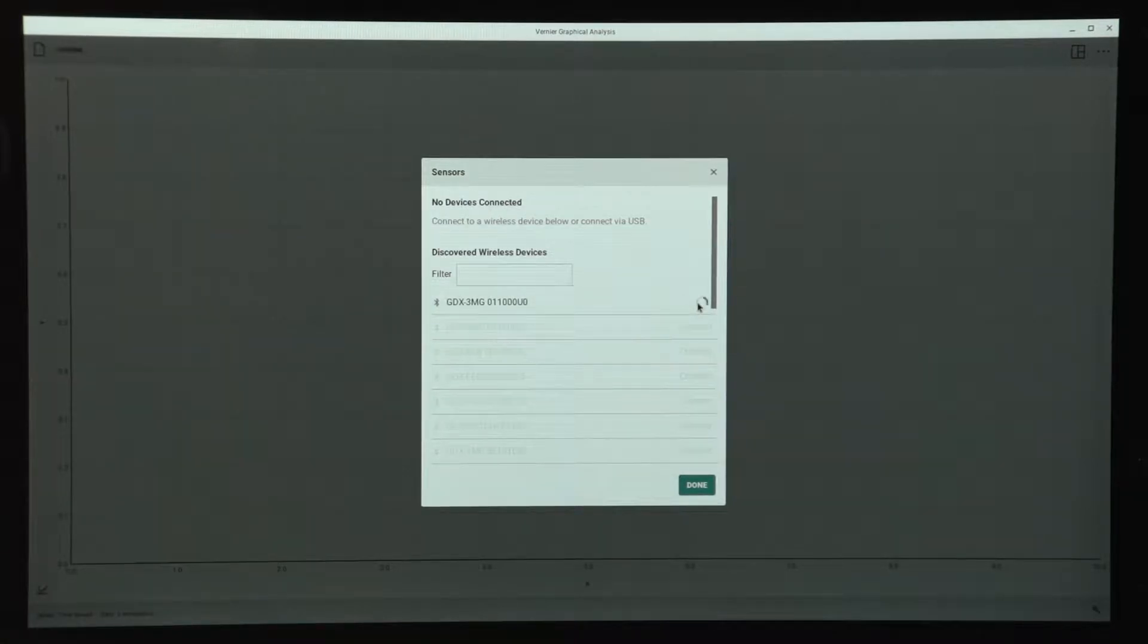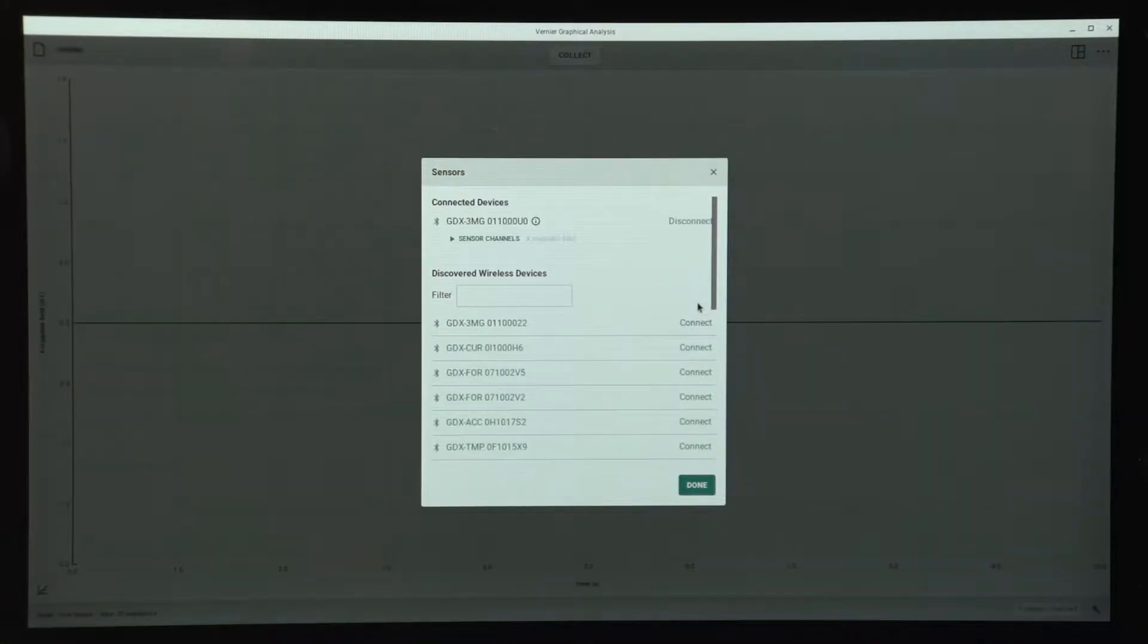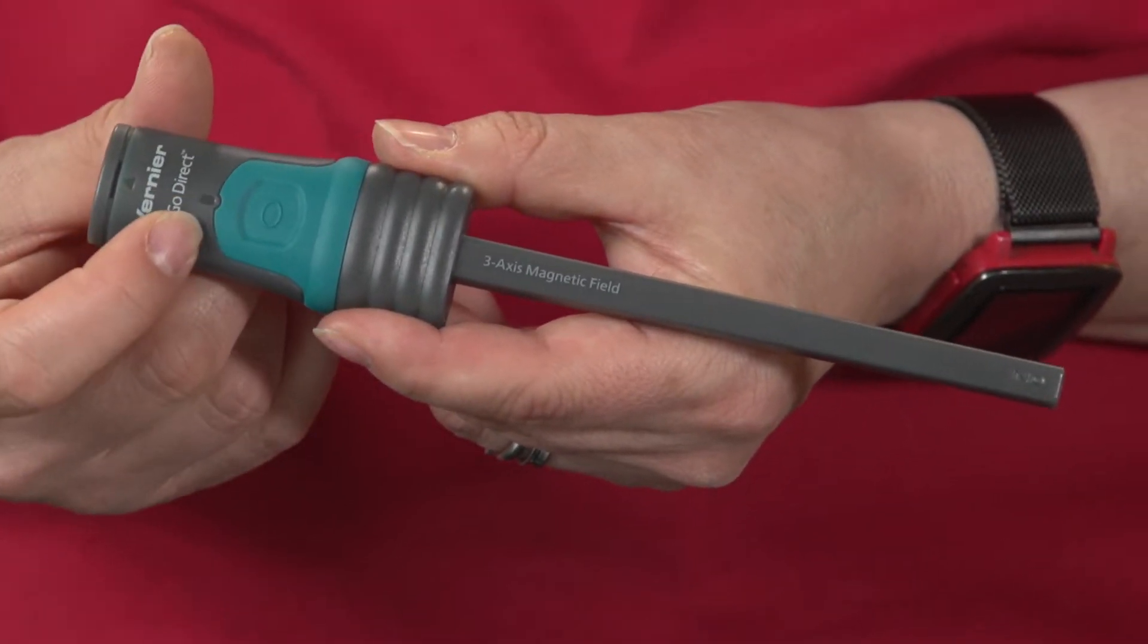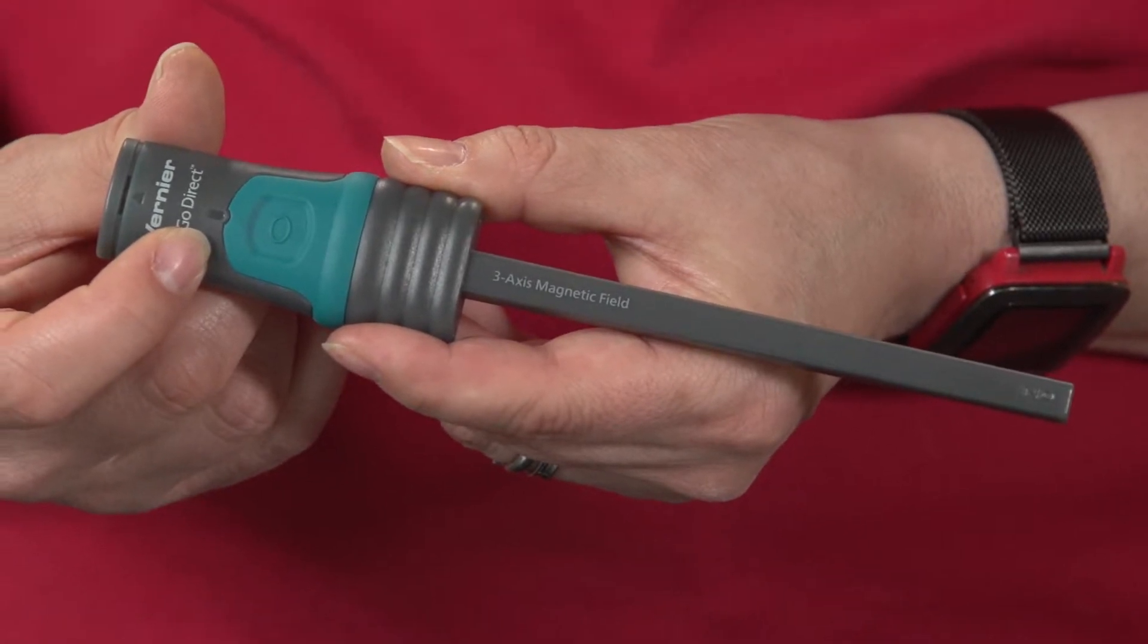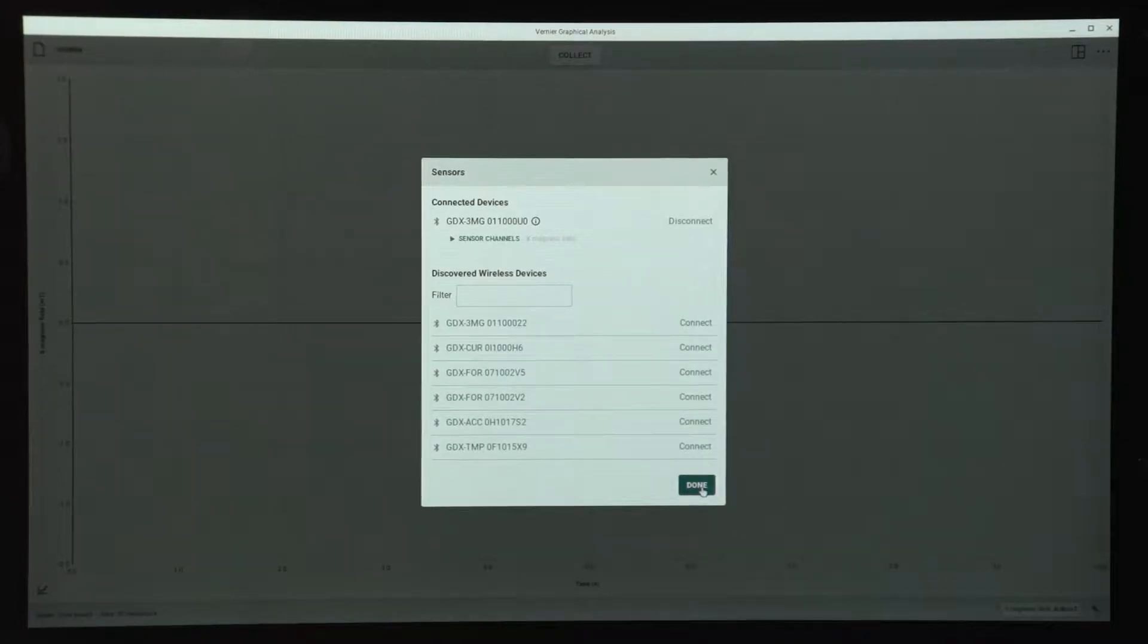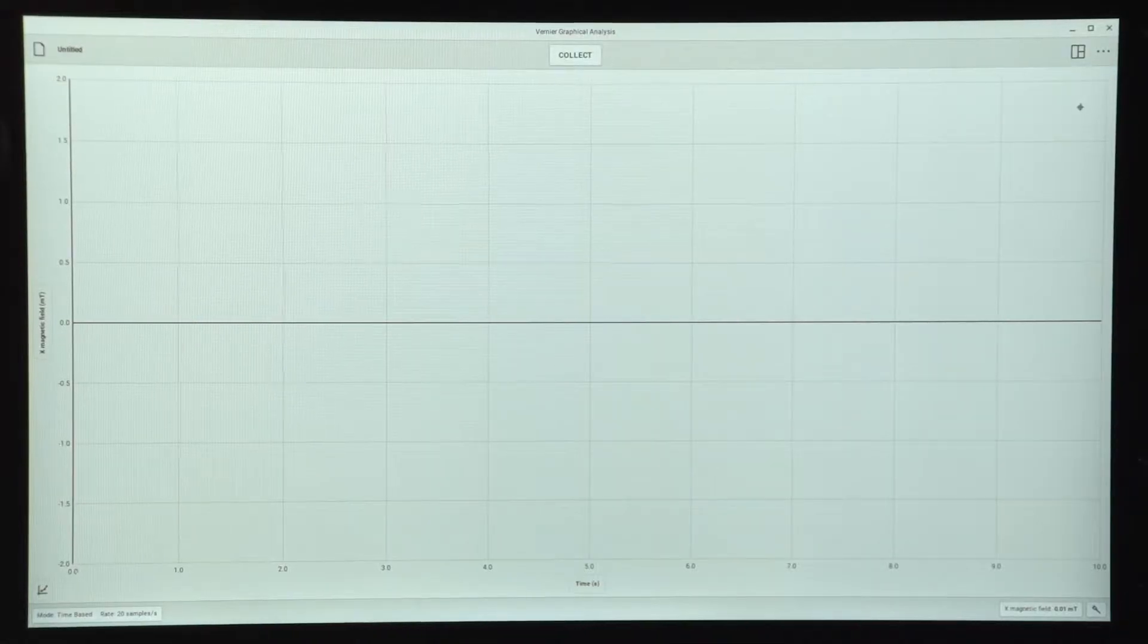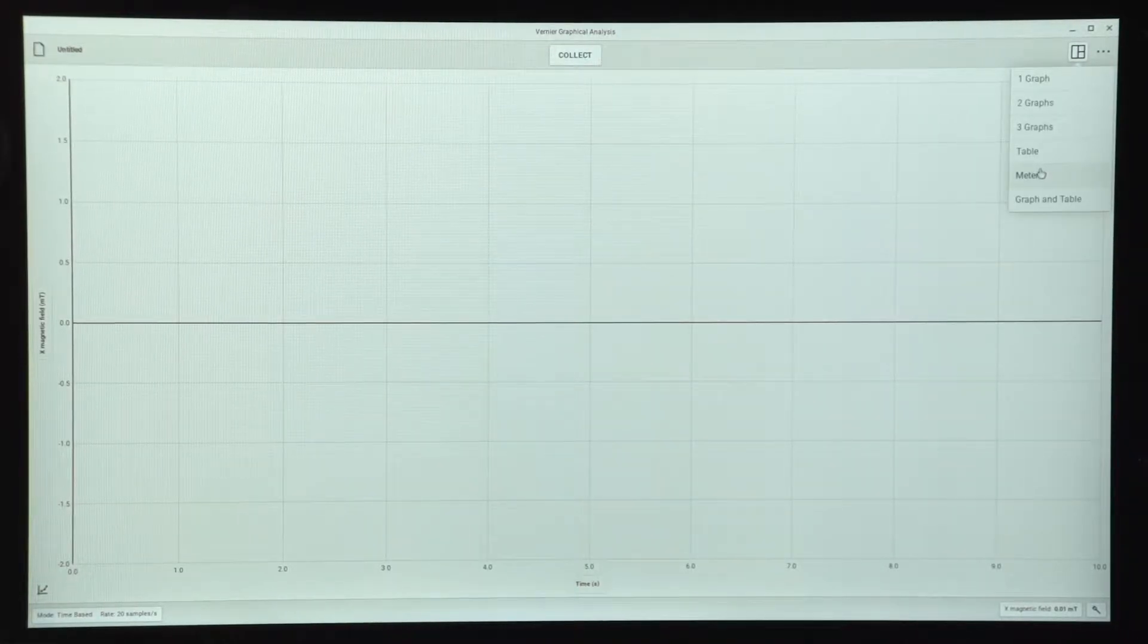Choosing connect, once it's connected, not only is it connected to measure in the direction of the wand, but the blinking light turns to green. I'm going to click Done. And since what I'd like to do first is just use this to check the direction of the magnetic field and which pole is which on the magnet, I'm going to switch my view to the meter view.